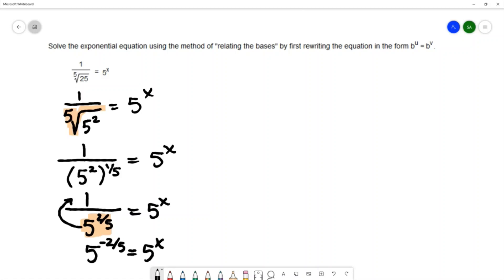So I've written the equation to have the same base on both sides. And now I can use the method of relating the bases. The method of relating the bases states that if the bases are the same, then the exponents must be equal to each other.